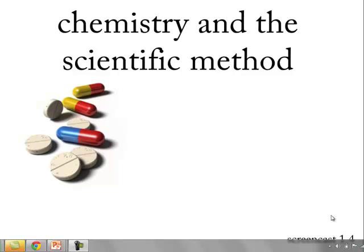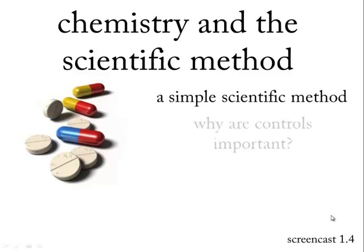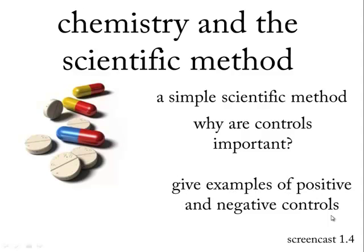Let's take a look at chemistry and how it relates to the scientific method. We'll take a look at a very simple four-step version of the scientific method. We'll think about how a chemist needs to use controls in order to apply this method, and we'll go into a little more detail than you might normally see with these controls. We'll take a look at both positive and negative controls.